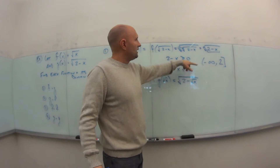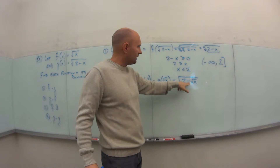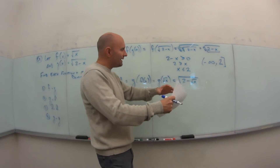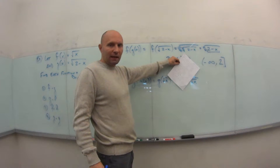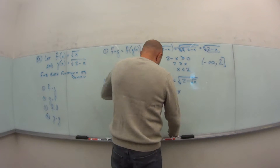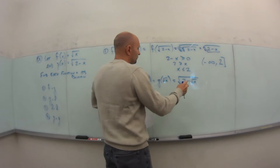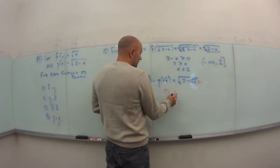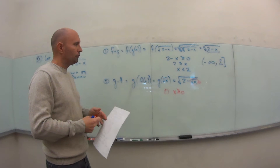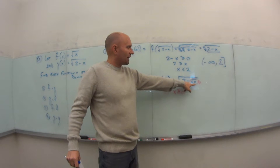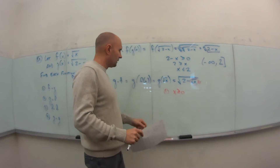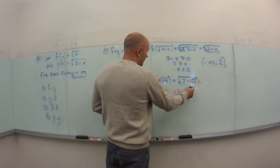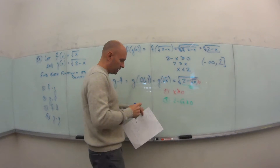Be careful — you can't simplify this to a fourth root like before because of the minus sign inside. For the domain, work from the inside out. Restriction 1: the inner square root of x requires x ≥ 0. Restriction 2: the entire expression under the outer square root, 2 − √x, must also be greater than or equal to 0.